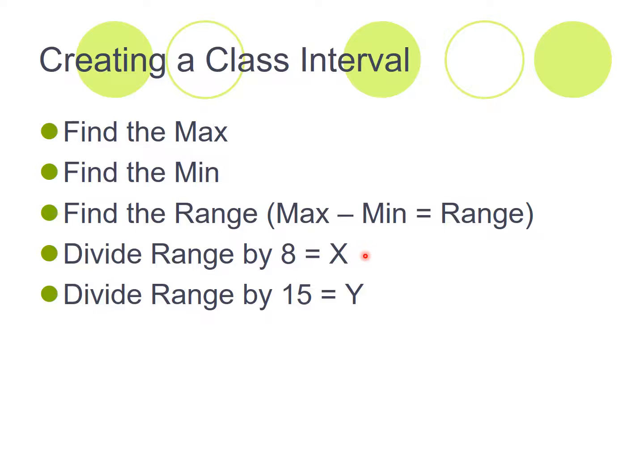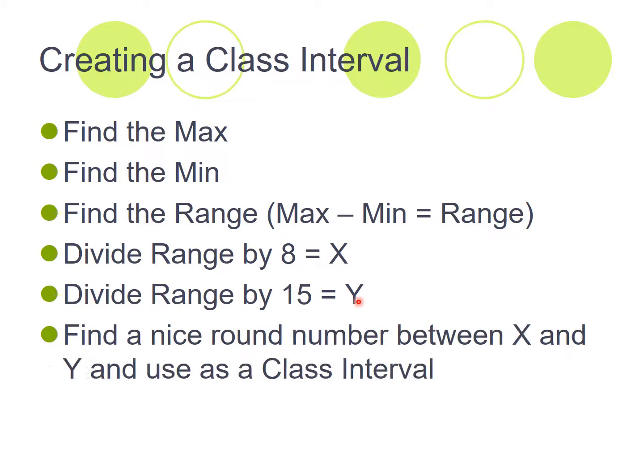We take the range, this one back up here again, not your answer here, the range, which is your maximum minus the minimum, you take the range and you divide by 15, and you get an answer here. And what you need to do next is find a nice round number between the first answer here you got when you divided by eight, and the second answer you got when you divided by 15. Find a nice round number. For example, we said five, 10, 20, 25,